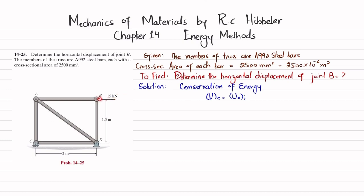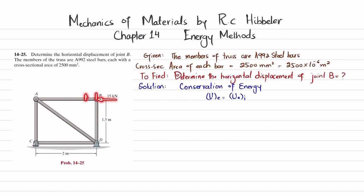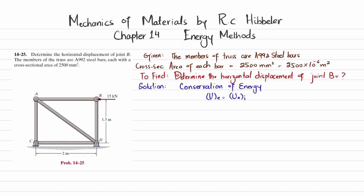Due to the load of 15 kilonewtons applied at point B, we need to find how much point B moves horizontally — that is the horizontal displacement of point B. This topic comes under the category of conservation of energy. Due to the external load, point B moves a distance delta, so the external work equals force times displacement, which is stored as strain energy. This external strain energy equals the axial strain energy in the truss.